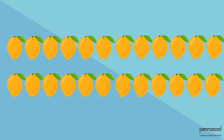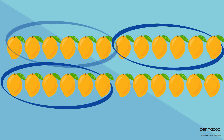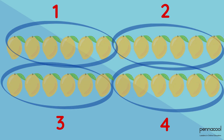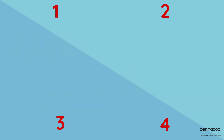We're going to circle groups of 6 until all 24 mangoes are in a set of 6. 1, 2, 3, 4, 5, 6. Well done! How many groups of 6 did we get altogether? Let's count: 1, 2, 3, 4 groups of 6. Fantastic job! You have just divided again, and as you can see there are no extras or remainders.